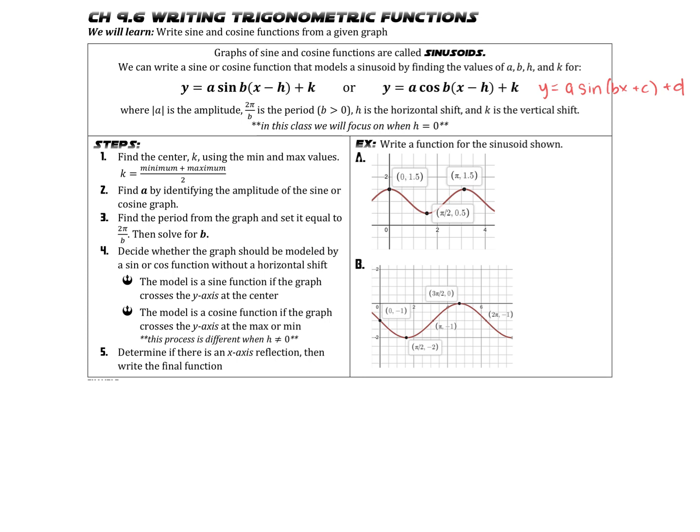Our goal in this lesson is to write sine and cosine functions given a graph. There's actually a special name for sine or cosine functions — it's called a sinusoid. Even though this particular vocabulary word has the word sine in it, a sinusoid is used to describe the graph of both a sine and a cosine function. We can write sine or cosine functions that model a sinusoid by finding the values we need to plug into the basic form of the function.